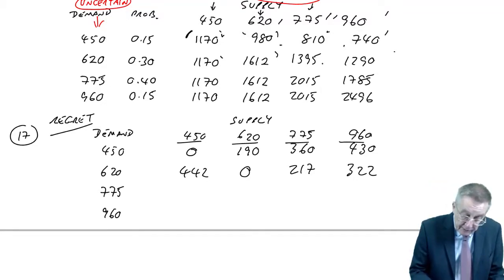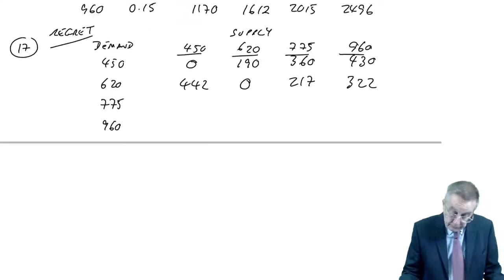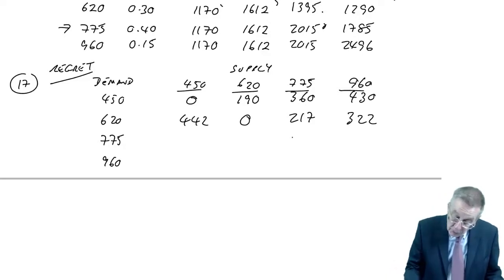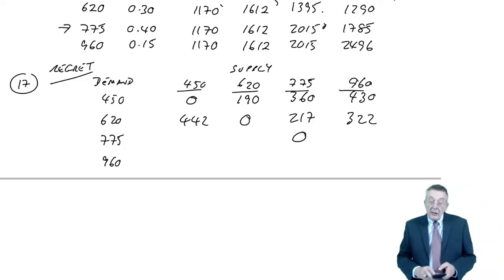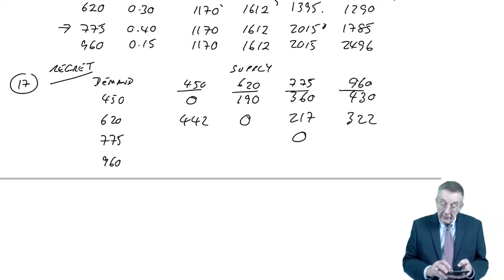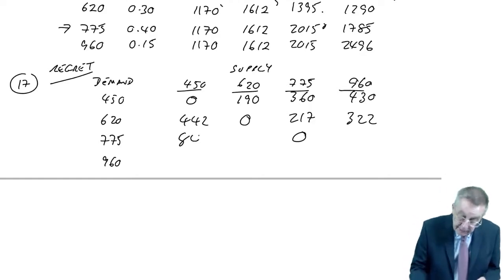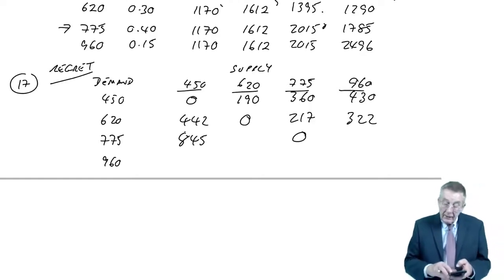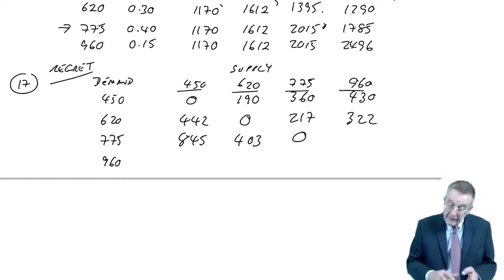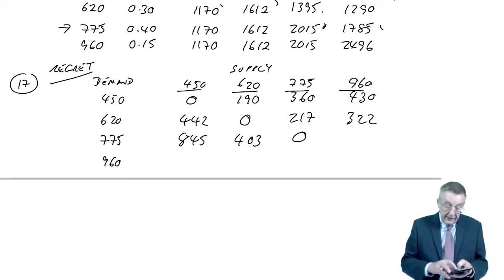What if the demand was 775? The best would have been 2015. There'd have been no regret. The others compare with 2015. So 1170 from 2015, we've lost 845. The next one, 403. And finally, 1785, as against 2015, 213.